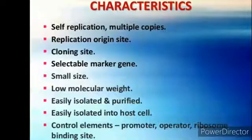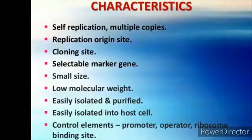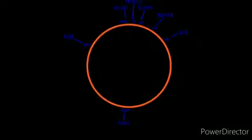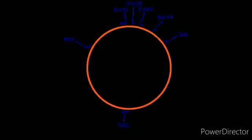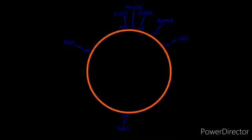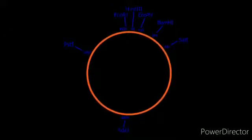Apart from natural vectors, artificial restricted plasmids like PBR322, PUC19, PUC109 etc. are also used in recombinant DNA technology.